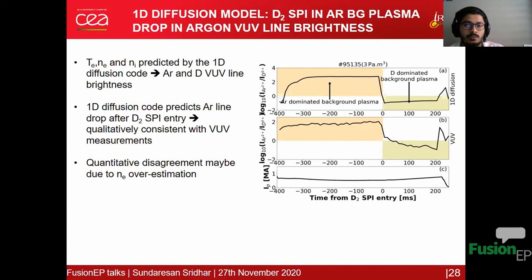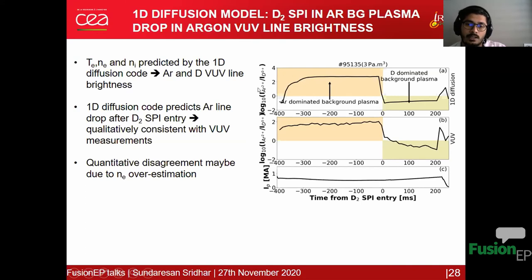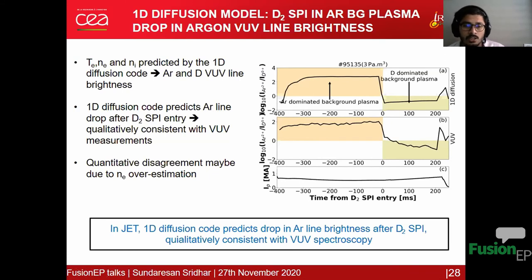To check if the model predicts the drop in argon VUV line brightness, we use the diffusion code outputs — electron temperature profile, free electron density profile, and species density profile. After deuterium SPI entry, the ratio of argon line brightness to deuterium line brightness drops to very low values, which is qualitatively consistent with VUV spectroscopy, but quantitatively there is a large disagreement — possibly due to overestimation of electron density by the code.